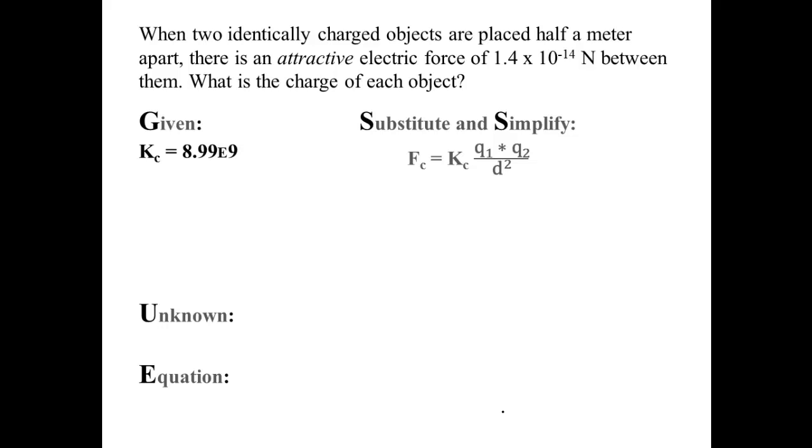When two identically charged objects are placed half a meter apart, there's an attractive force of 1.4 times 10 to the negative 14th newtons between them. What's the charge of each object?